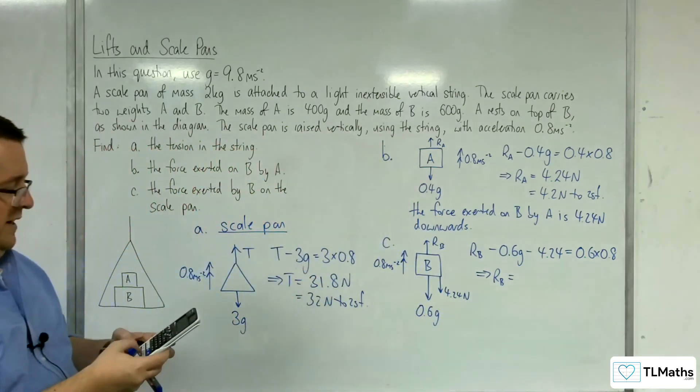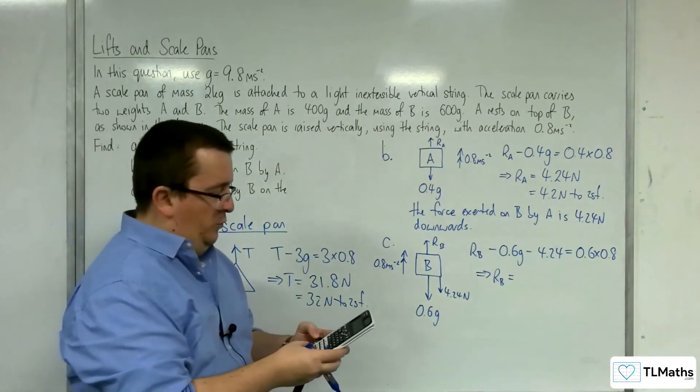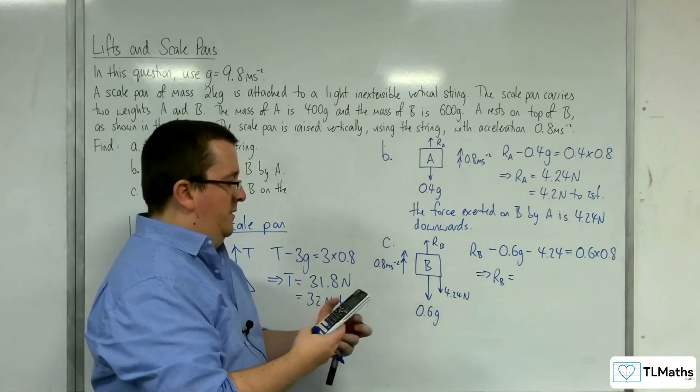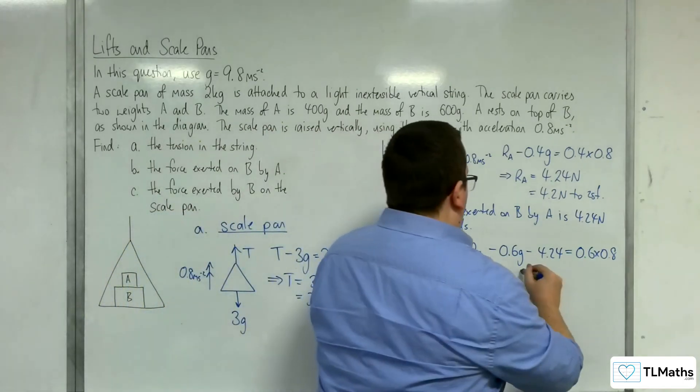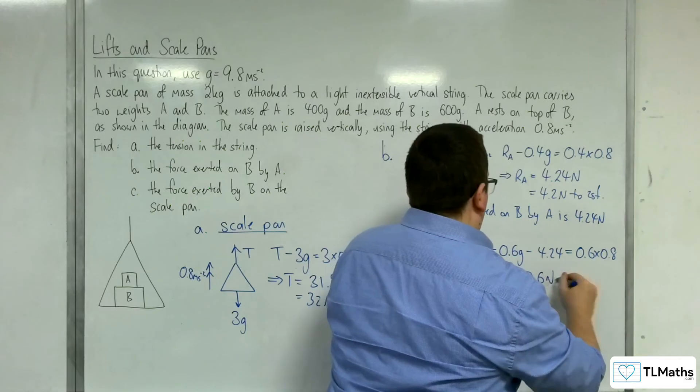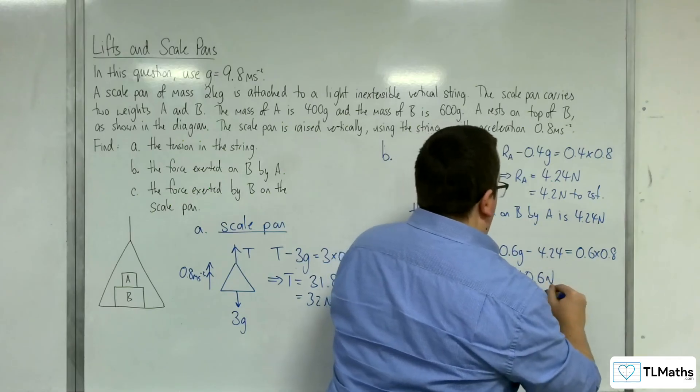So we have 0.6 times 0.8, plus 4.24, plus 0.6 times 9.8. And that should get us 10.6 newtons, which is 11 newtons to 2 sig fig.